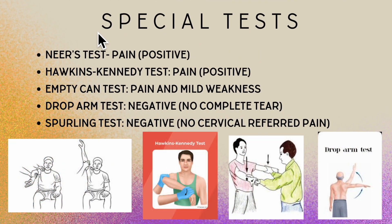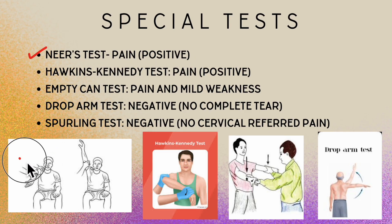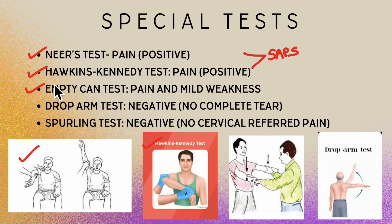For special tests, we select a few relevant to our subjective and objective findings. We need to assess for subacromial pain syndrome and check if the rotator cuff tendons are intact. The Neer test was positive, indicating subacromial impingement or pain syndrome. The Hawkins-Kennedy test was also positive, again indicating subacromial pain syndrome. The empty can test — which checks the structural integrity of the supraspinatus tendon — was positive, showing pain and mild weakness.